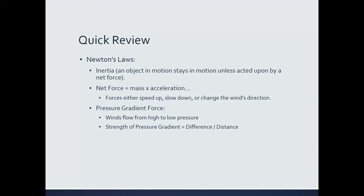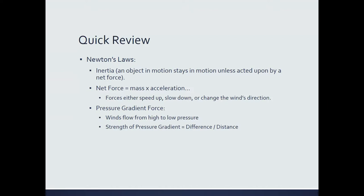In the last lecture we talked about the pressure gradient force — the force responsible for speeding the wind up. Without the pressure gradient force, we would have no wind. It's caused by differences in pressure, and winds flow from areas of high pressure to regions of low pressure. Differences in pressure are caused by differences in temperature. If you don't remember, go back and review the two-column model.